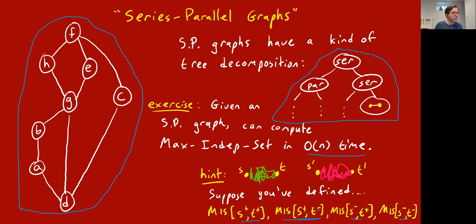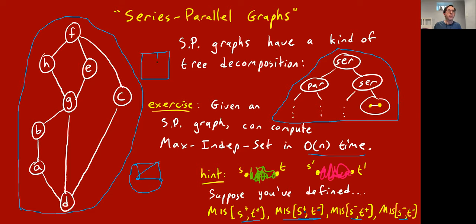There's a question: are there planar graphs that are not series-parallel graphs? That's a very good question — yes, there are. One example is K4, the complete graph on four vertices, which really is planar. K4 is not a series-parallel graph. Another example we'll encounter later is a three-by-three grid graph — it's planar and it's not series-parallel.